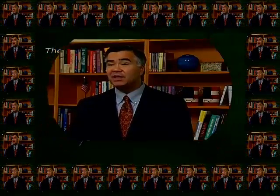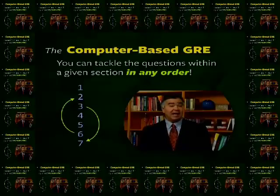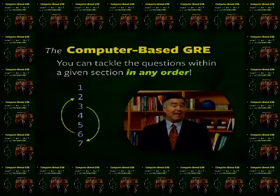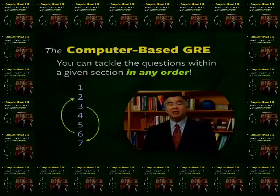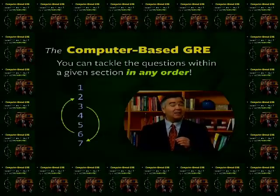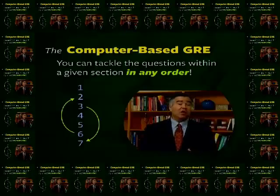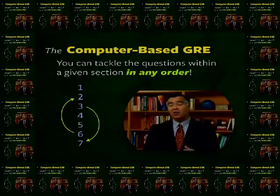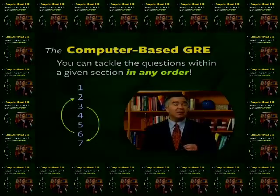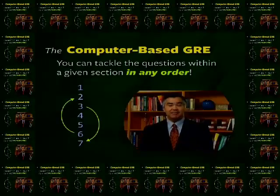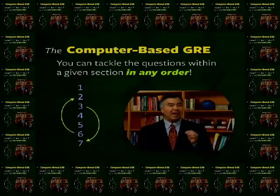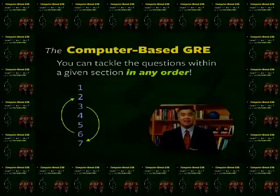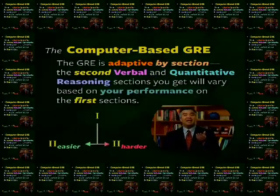The computerized GRE that you take will not be adaptive in that way. On the computerized GRE now, you can tackle the questions within a given section in any order you prefer. So if you find question 11 in a particular section very tough, you can skip it and come back to it later. At the end of a complete section, if you want to go back to question one or any other question and take another look at it, you're perfectly able to do that. As a result, the computerized GRE is no longer adaptive on a question-by-question basis within sections. Instead, it seems that the GRE is now adaptive by section.